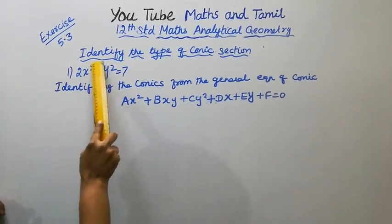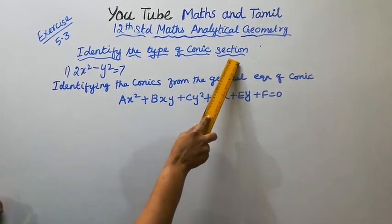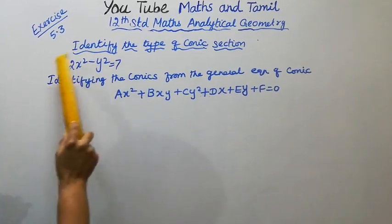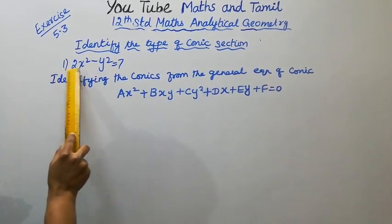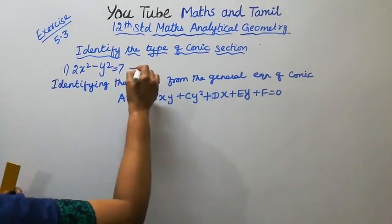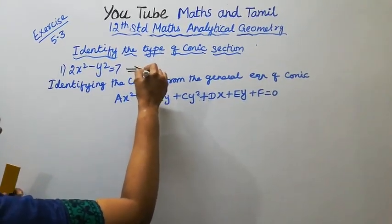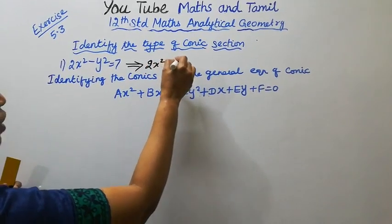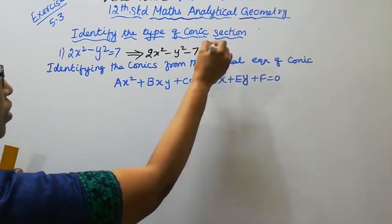First sum. Identify the type of conic section. 2x² - y² = 7. 2x² - y² - 7 = 0.